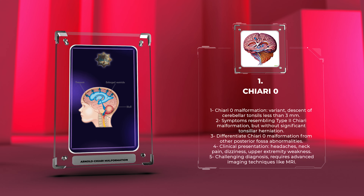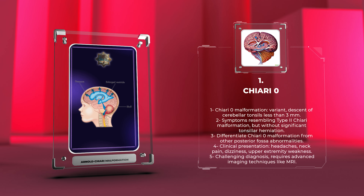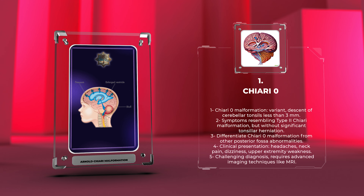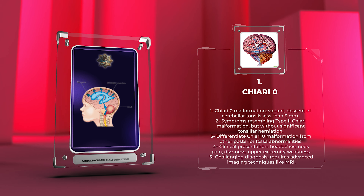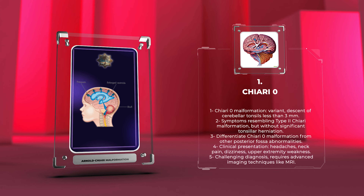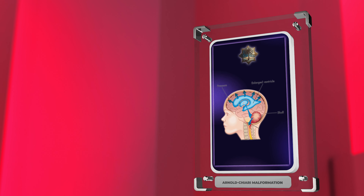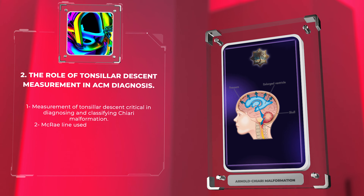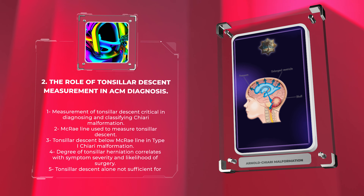It is crucial to differentiate Chiari Zero Malformation from other posterior fossa abnormalities to ensure accurate diagnosis and appropriate management. However, due to the lack of significant tonsillar herniation, the diagnosis can be challenging and often requires advanced imaging techniques, such as MRI, to evaluate the craniovertebral junction and rule out other causes of symptoms. The measurement of tonsillar descent plays a critical role in the diagnosis and classification of Chiari Malformation.